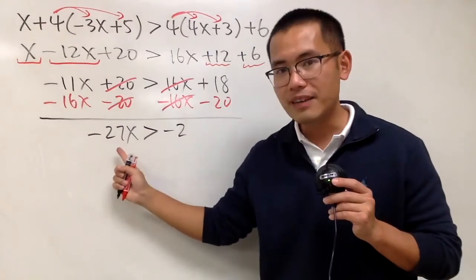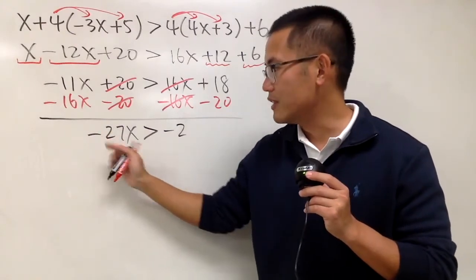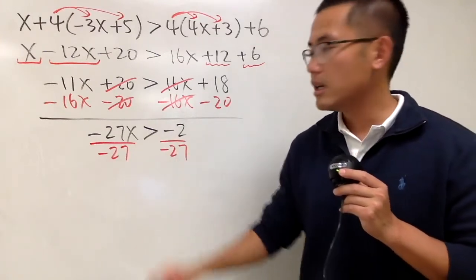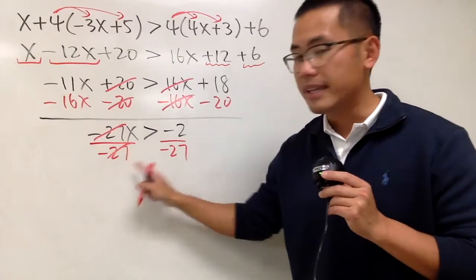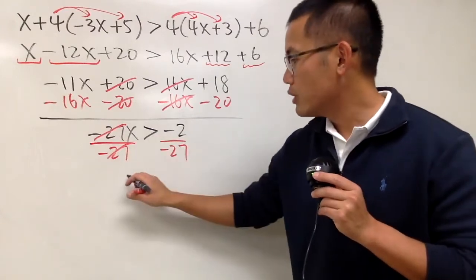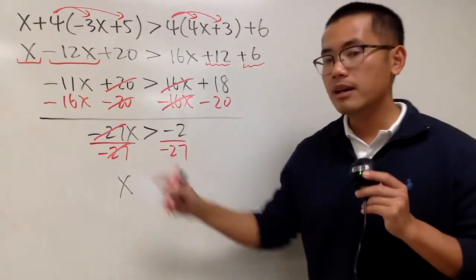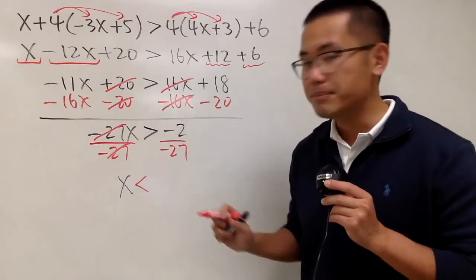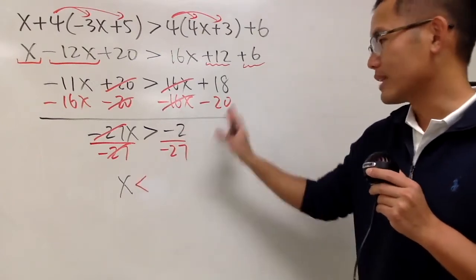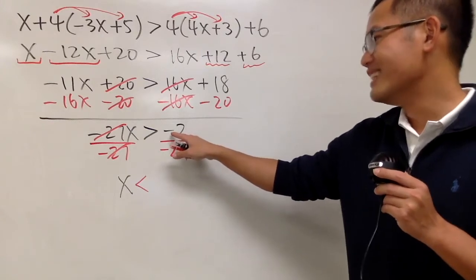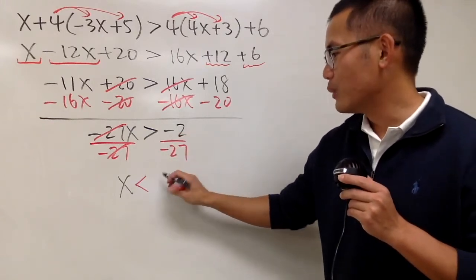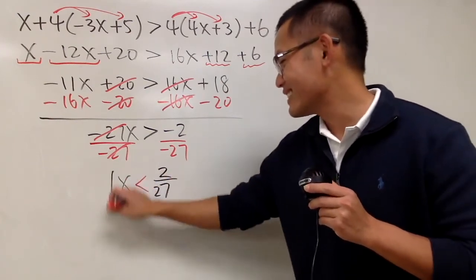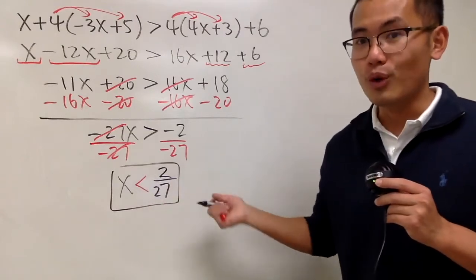Finally, we have negative 27x, so we divide by negative 27 on both sides. When you divide by a negative number in an inequality, be sure you switch the inequality — because we divided by negative 27, this becomes a less than symbol. Negative divided by negative is positive, and we have 2 over 27. Final answer: x is less than 2 over 27.